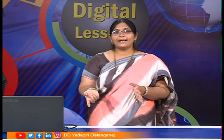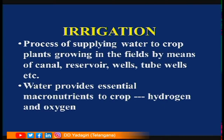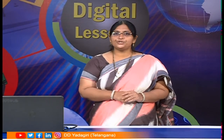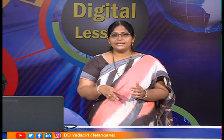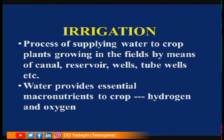The next agricultural practice is irrigation. Irrigation means supplying water to the crop. Water is essential for plant growth because nutrients present in the soil mix with the water, which goes to the roots and is absorbed by them. Irrigation involves the process of supplying water via canals, reservoirs, wells, tube wells, etc. Water provides essential macronutrients such as hydrogen and oxygen.